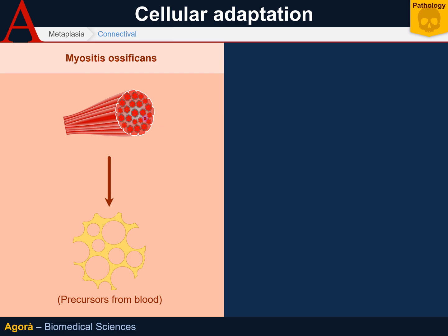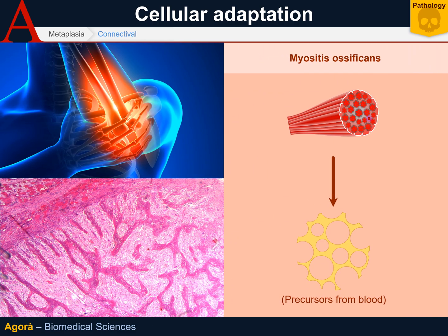Cases of connective tissue metaplasia are rare. One of the most peculiar is a phenomenon occurring after an extremity bone fracture, when bone segments begin to form in the muscle tissue surrounding the broken extremity. Apparently, this phenomenon is driven by osteoblast precursors from blood. In fact, connective tissue metaplasia isn't an actual metaplasia, since the new tissue doesn't go through any changes but inserts into a pre-existing tissue, although this hypothesis has yet to be confirmed.